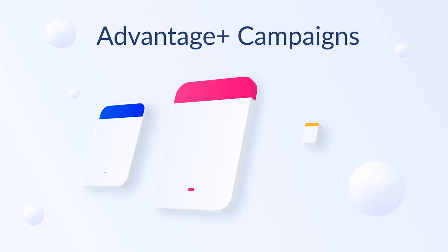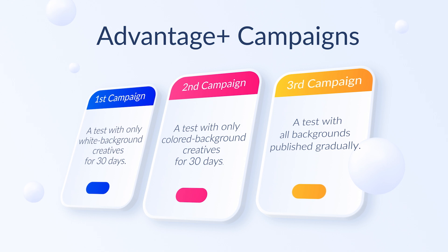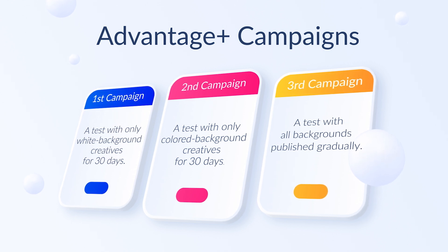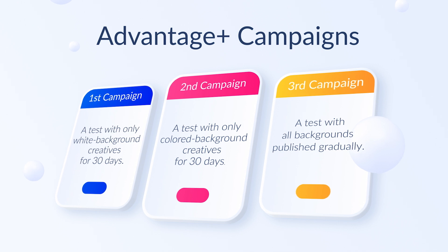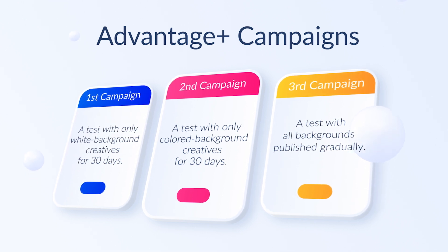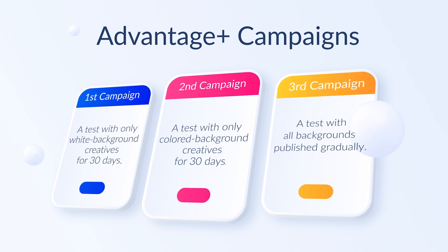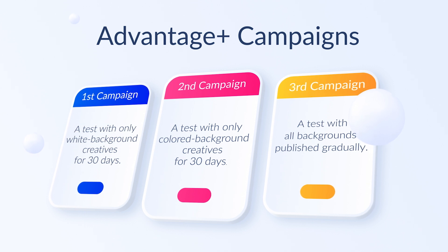Basically we're running three Advantage+ campaigns. One is the control, running for 30 days with white background only. The second has all the AI backgrounds without the white ones. The third has all of them including white — white starts week one, velvet opens week two, masculine week three, and onyx week four.